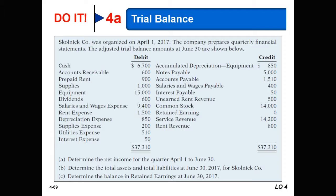Skolnick Company was organized in April of 2017 and creates quarterly financial statements. The quarters are: January, February, March (Q1); April, May, June (Q2); July, August, September (Q3); and October, November, December (Q4), using a calendar year. We are asked to determine the net income for the quarter April 1st to June 30th from the adjusted trial balance, as well as total assets, total liabilities, and retained earnings at June 30th, 2017.